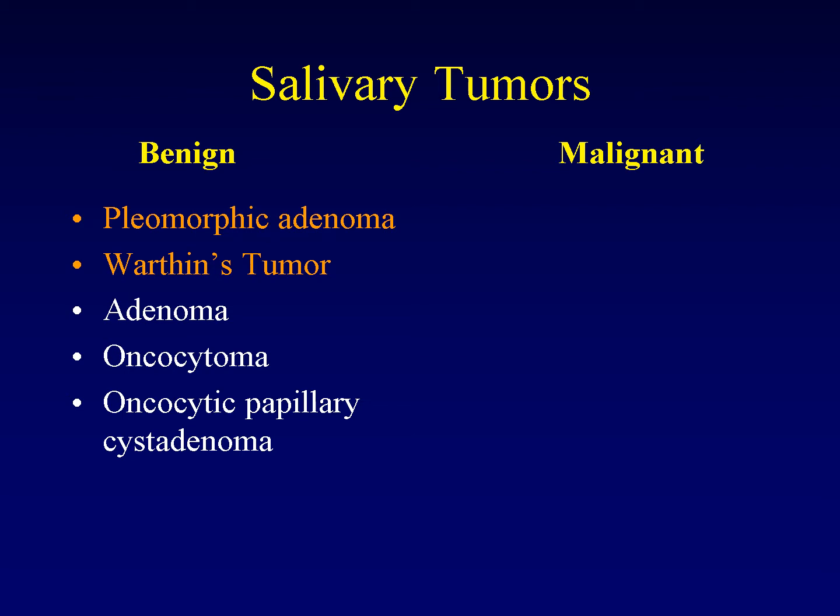If you consider that 80% of the tumors in the parotid are benign, and 80% of those are pleomorphic adenoma, you see that the majority of lesions encountered in the parotid gland are in fact pleomorphic adenomas. So when you're putting together a differential diagnosis, that's a smart place to start.